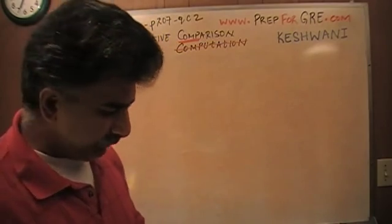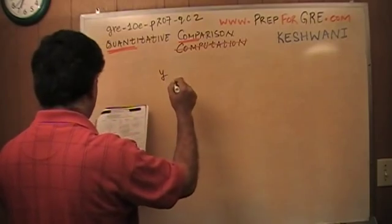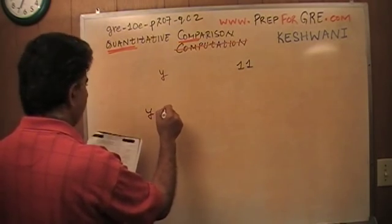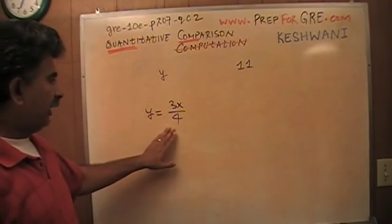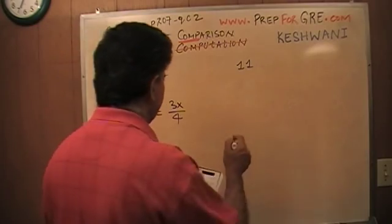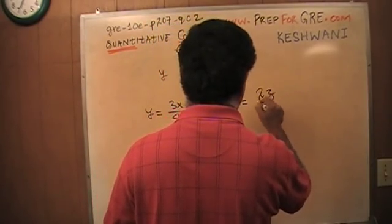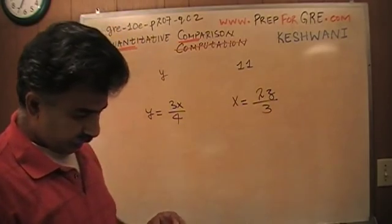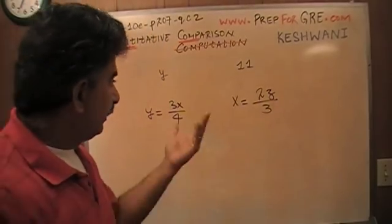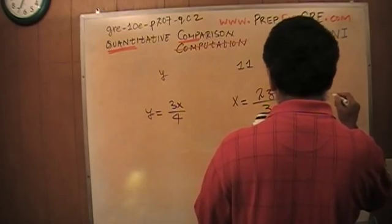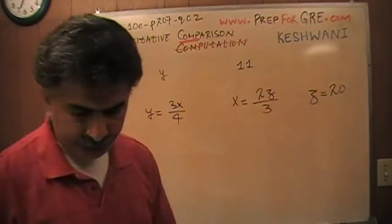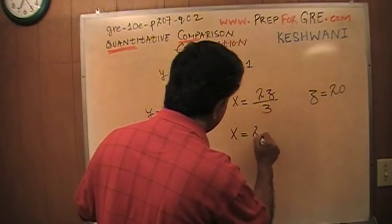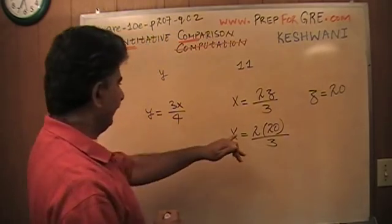In the second problem, they want you to compare the quantity y versus 11. The information given is that y equals 3 times x over 4, but in order to find y I need to figure out the value of x. They go on to tell you that x equals 2 times z over 3. Again, in order to figure out x I need the value of z, and they give you z equals 20.